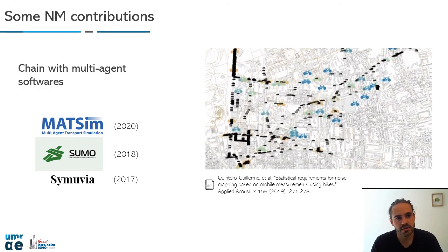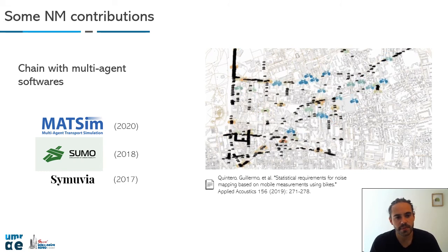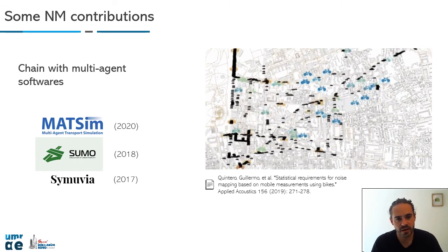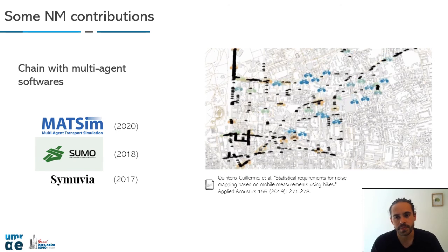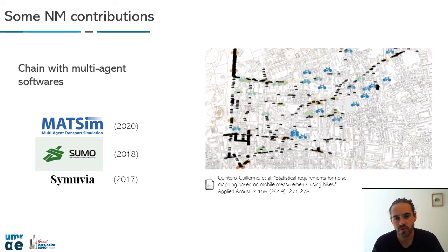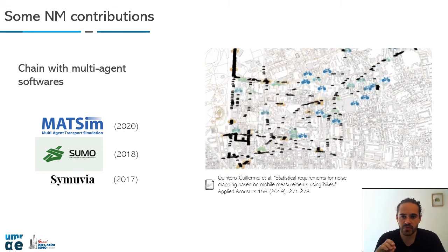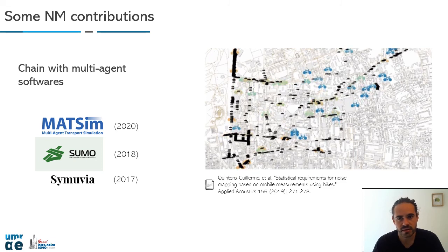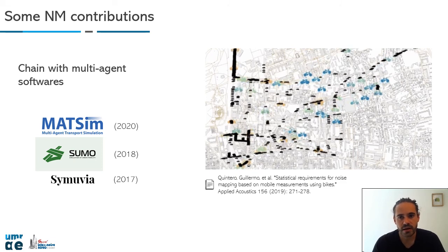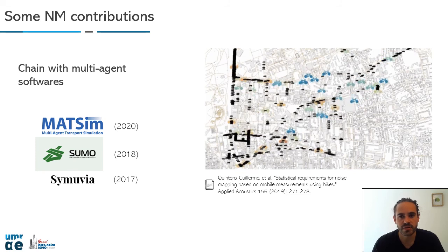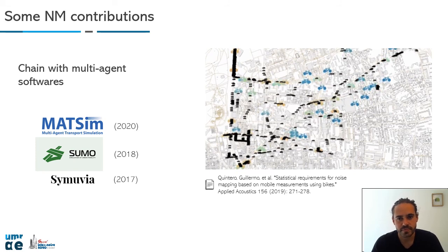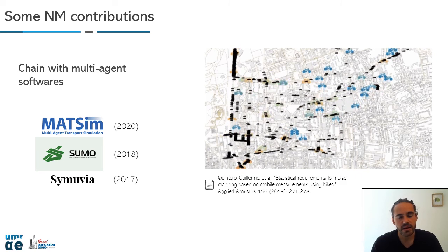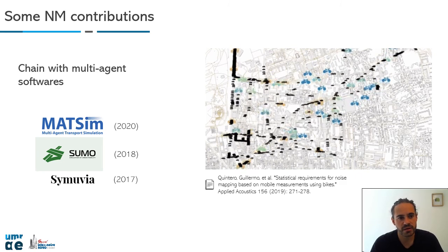We did dynamic noise mapping by coupling noise modeling with multi-agent software. The first coupling was with Simuvia in 2017. You can see directly where cars and cyclists are in real time, and in this way you can estimate the noise exposure of those users.